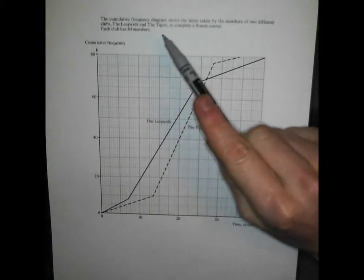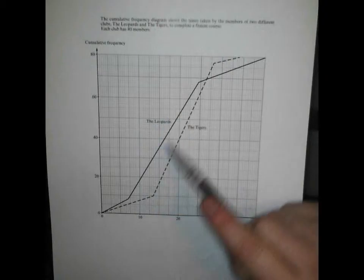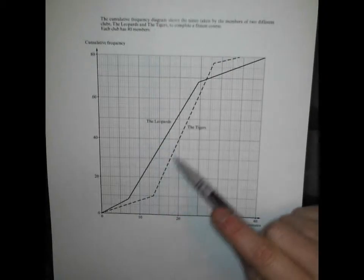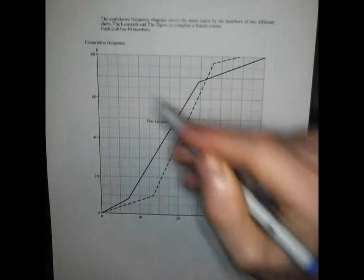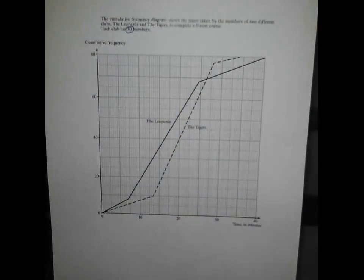The Cumulative Frequency Diagram shows the times taken by members of two different clubs: the Leopards, shown as the solid line, and the Tigers, the dashed line, to complete a fitness course. Each club has 80 members. I'm obsessed with circling numbers whenever I see them.